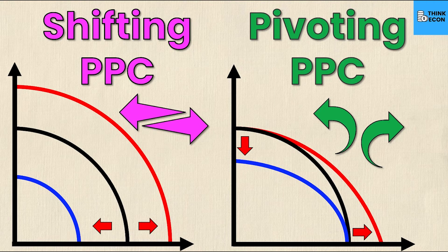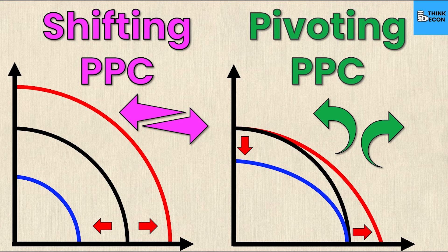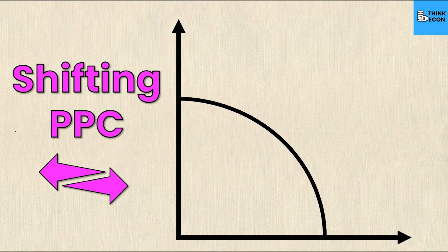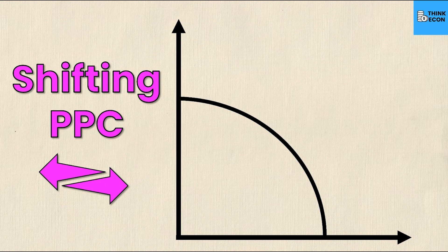When you're moving the PPC there are two different things you could do: you could move the x and y intercepts together, which is a shift of the PPC left or right, or you can pivot, which is when you move the x intercept and the y intercept by different amounts. To begin, we need to remember that on both axes are two different goods — good Y on the y-axis and good X on the x-axis.